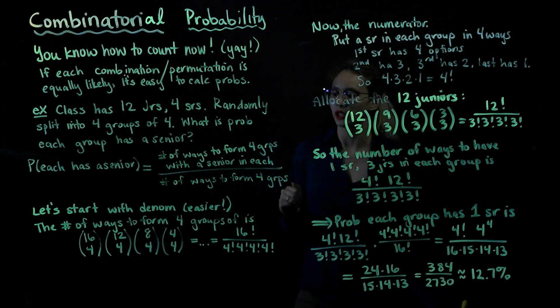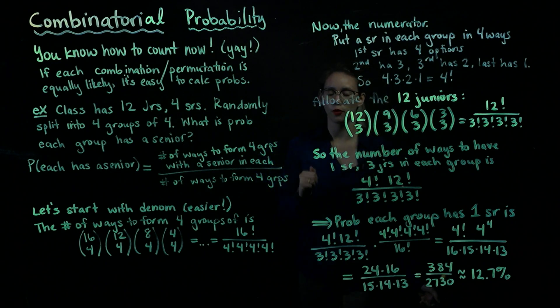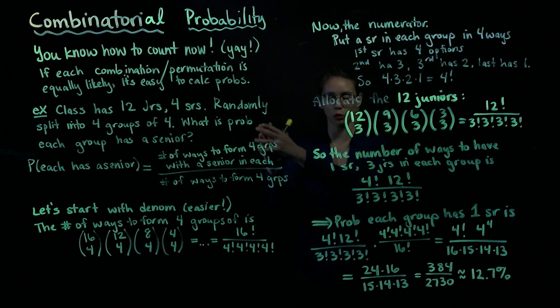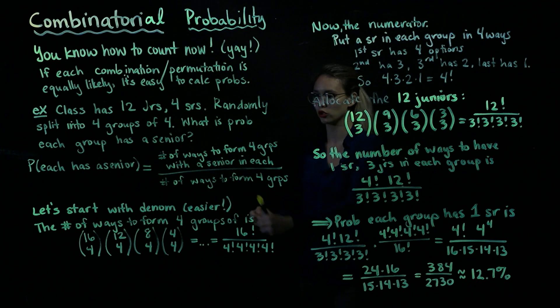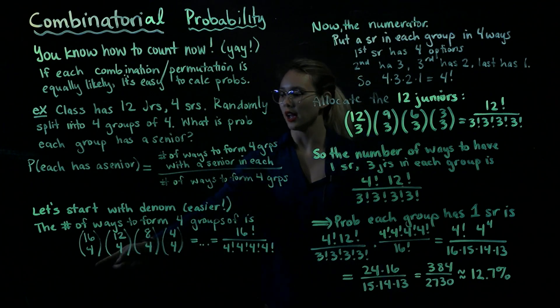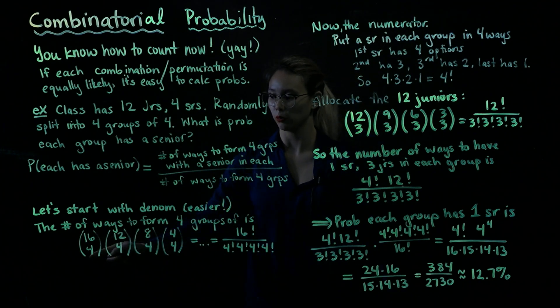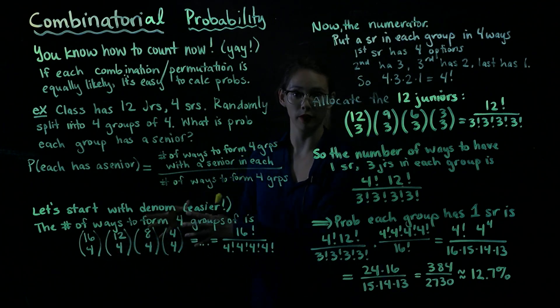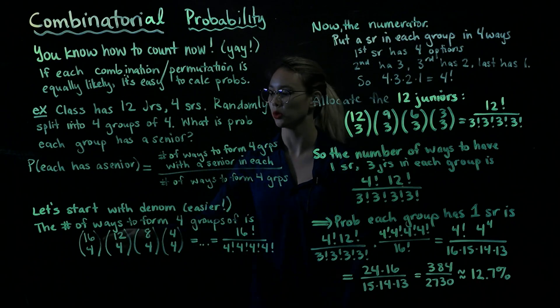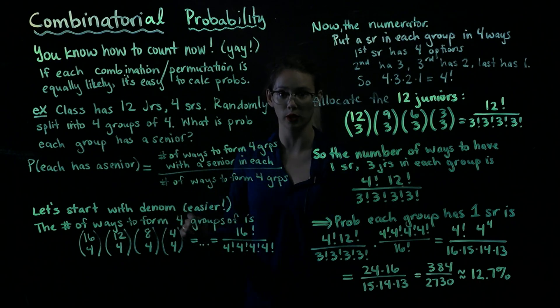We're trying to form four groups of four. Imagine we're working on the first group: we have 16 students to choose from, and we're selecting four of them to be in this group, so we have 16 choose four.